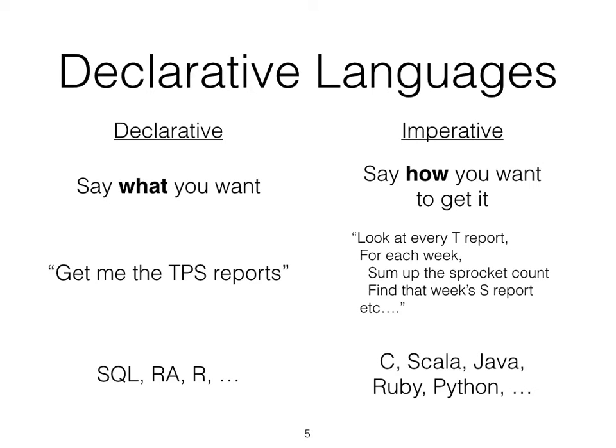For example, if I were going to describe getting the TPS reports declaratively, I'd just say 'get me the TPS reports' and then someone possibly figures out what to do. In an imperative language, I'd actually have to say: go to this filing cabinet, go through every single report in that filing cabinet, find the ones labeled TPS, and then produce those reports.